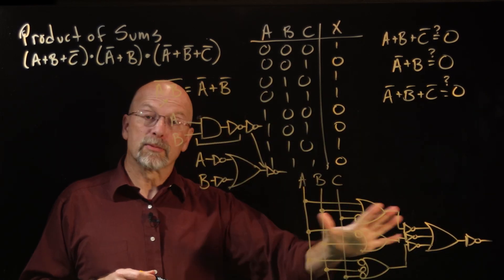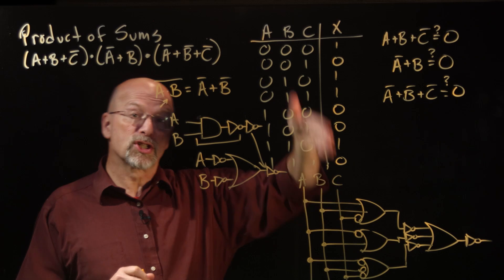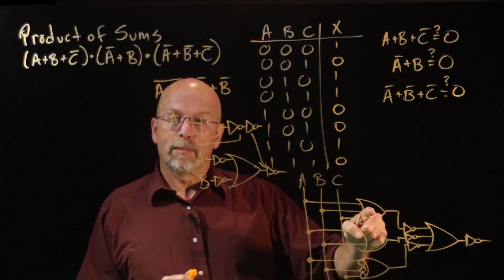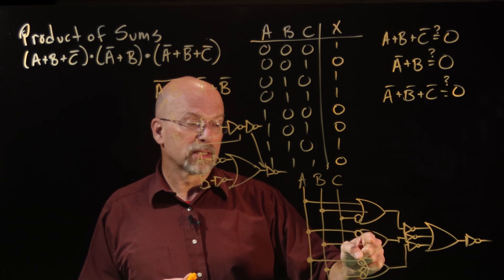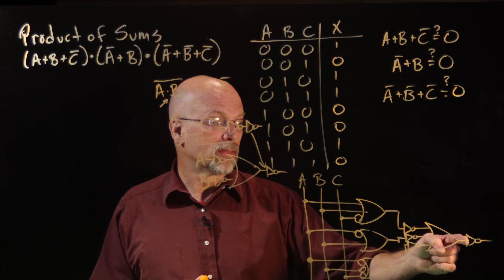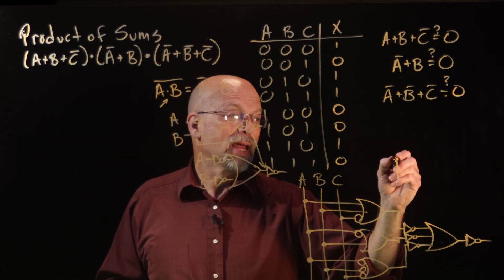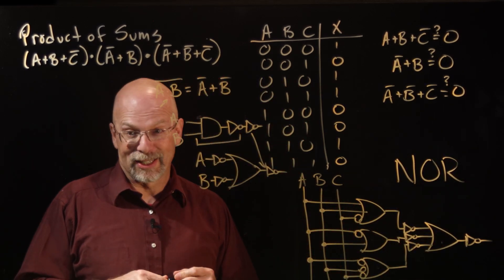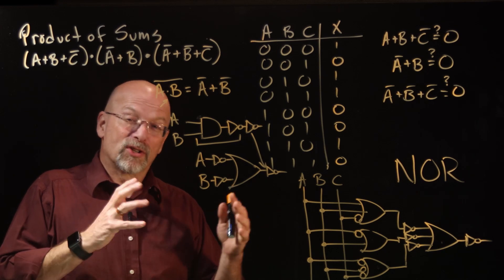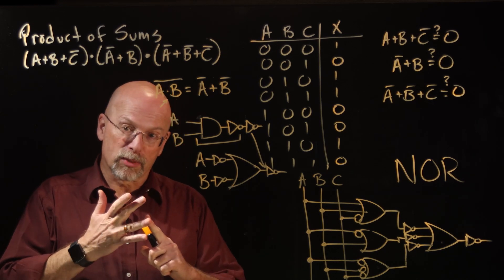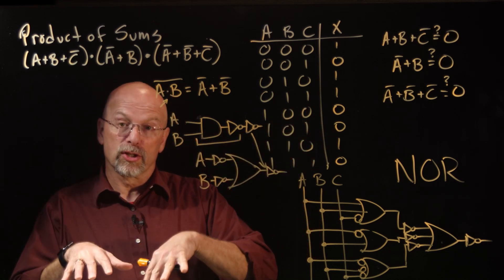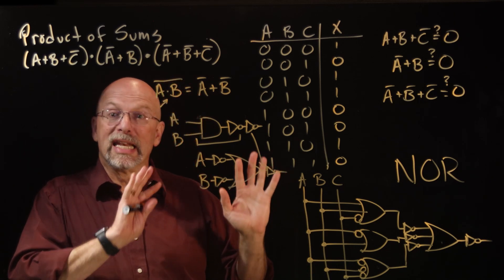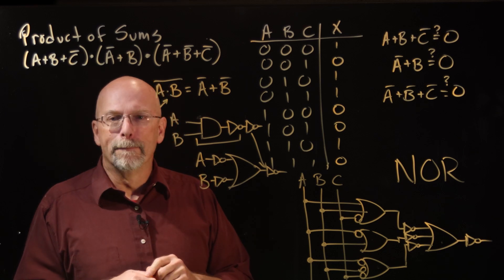Same circuit — didn't change anything about the functionality. We're still doing the same truth table. But by taking each inverter and putting it back to the tip of each OR gate, we can create a product of sums with nothing but NOR gates. And there you go. We've talked about sum of products and product of sums expressions, gone from a truth table to the expression to the circuit, gone from the expression to the truth table, and showed how we can use NAND logic or NOR logic to implement both of them.